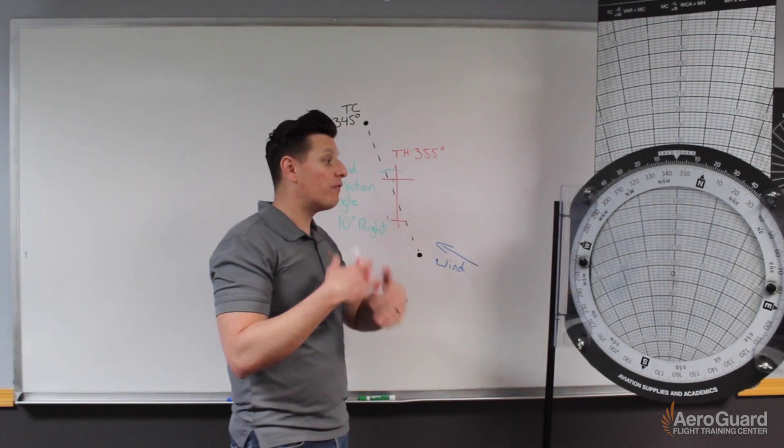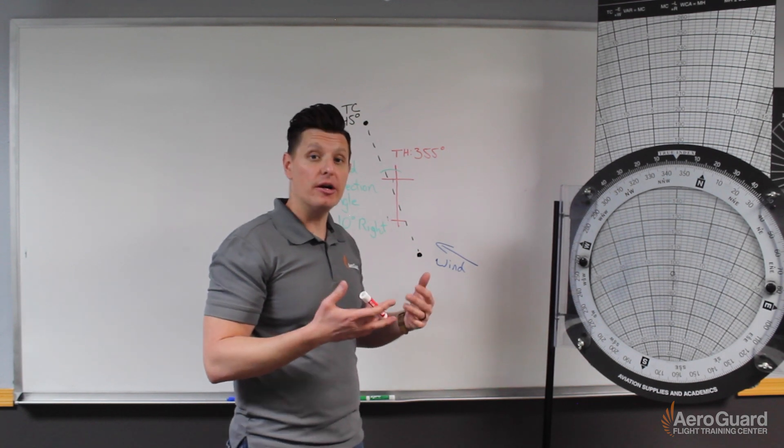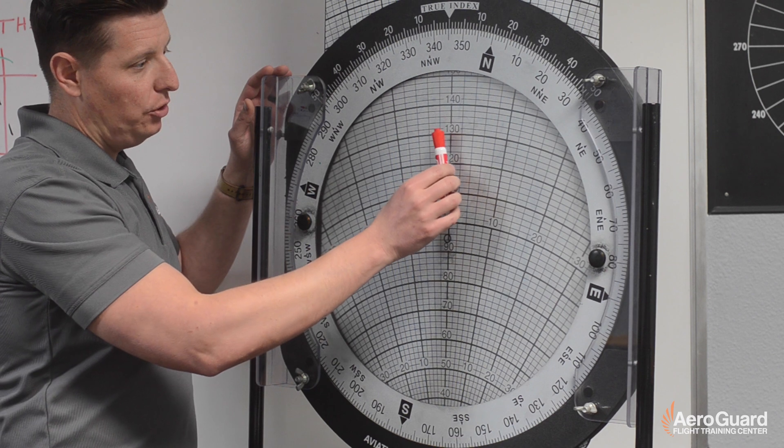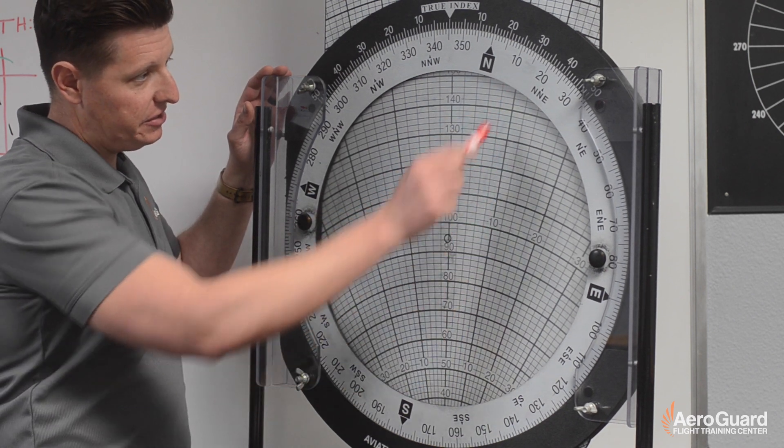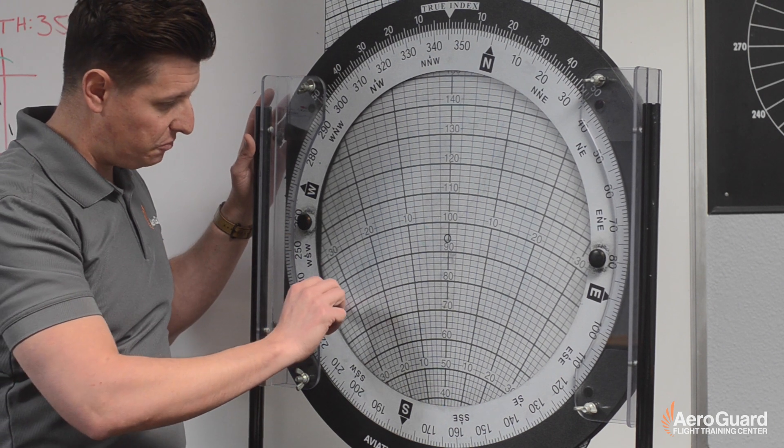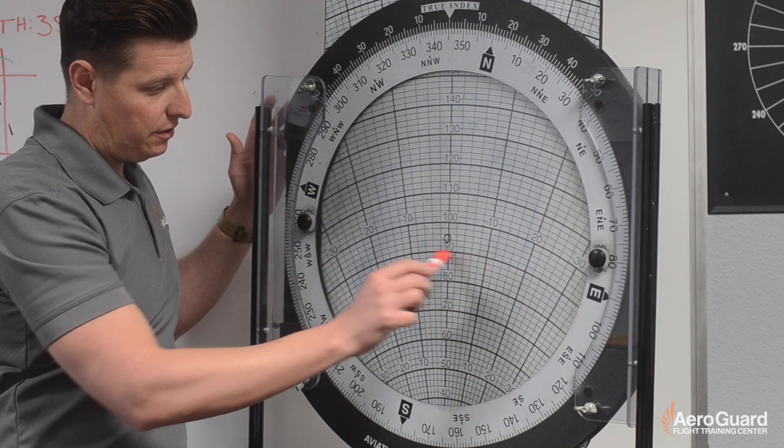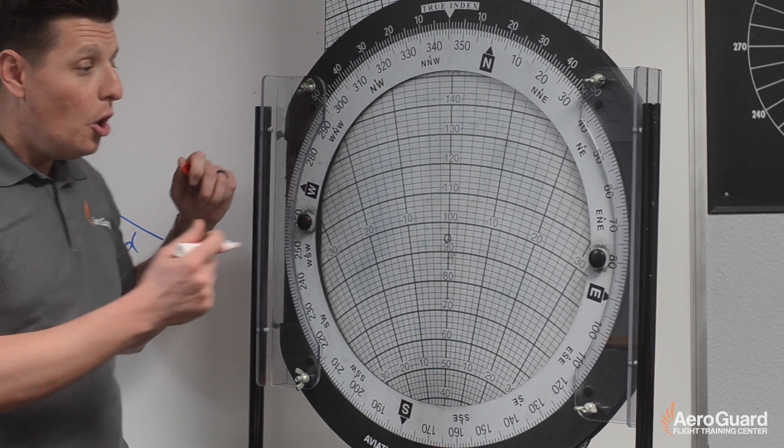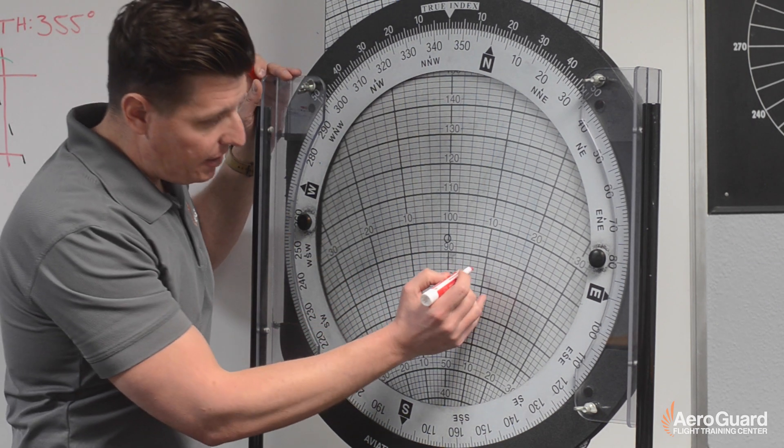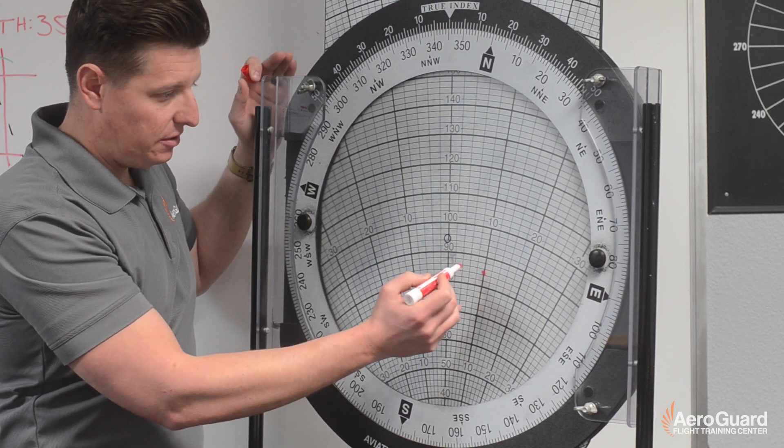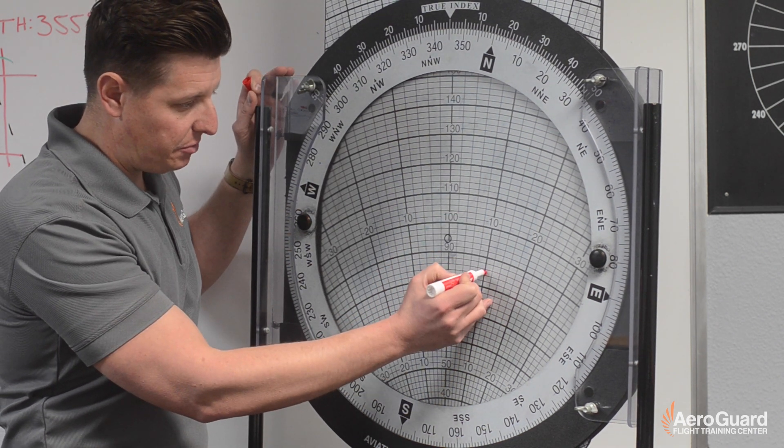And we know from the question that our true air speed was 85 knots. So our wind correction angle to the right of 10 degrees is going to be here. And 85 knots of true air speed is going to be this curve between 80 and 90. So what I'm going to do is make our wind dot, and we're going to place it where that 10 intersects this 85 air speed. So that's our wind dot.